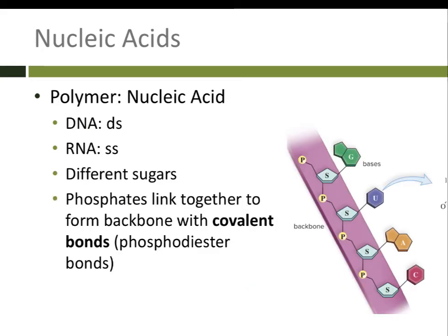The polymer for a nucleic acid is either RNA or DNA. DNA is double-stranded, meaning it has two backbones, while RNA is single-stranded with only one backbone. They also have different sugars, which is part of why RNA is single-stranded and DNA is double-stranded. To hook monomers together — each made of a phosphate, sugar, and base — we use a dehydration reaction to form a covalent bond called a phosphodiester bond, because we're hooking together phosphates.